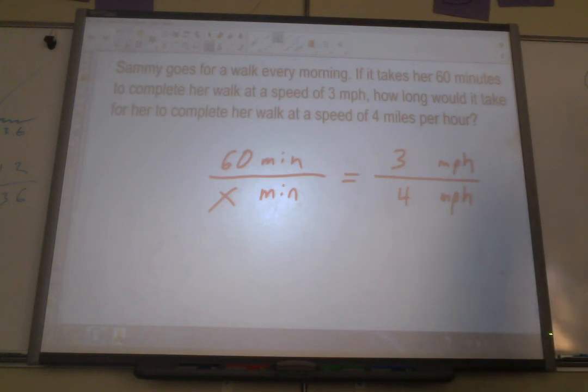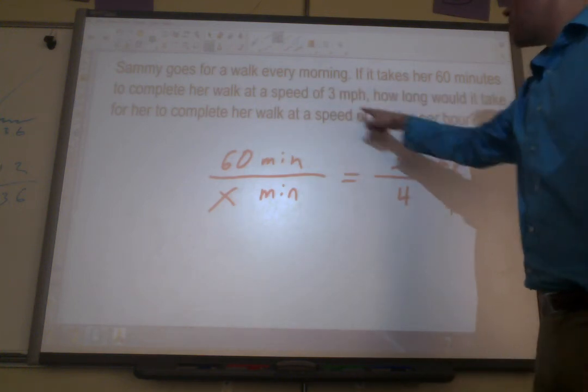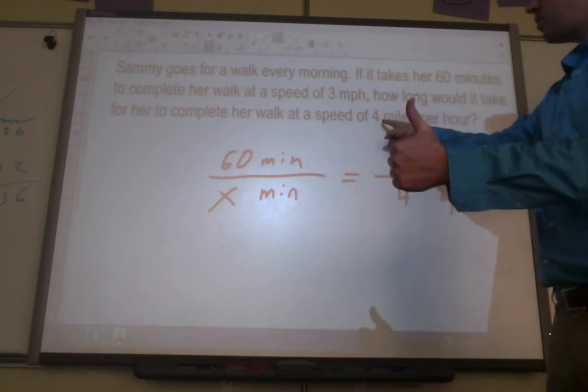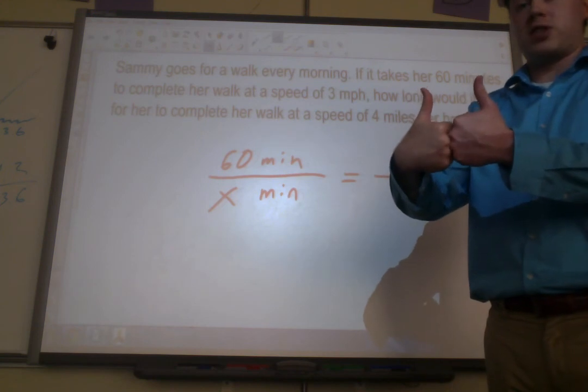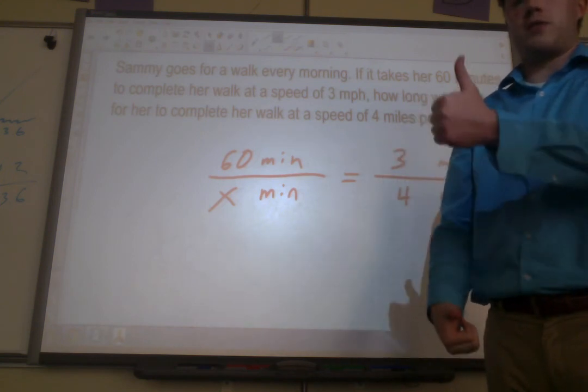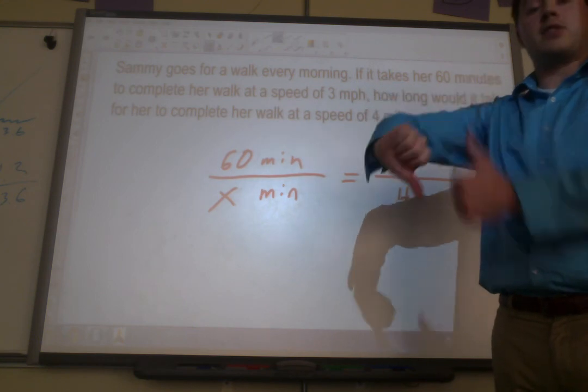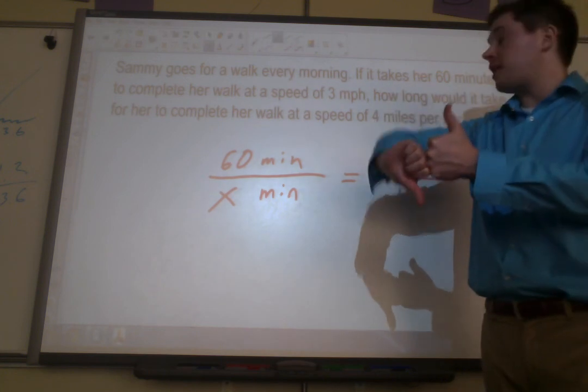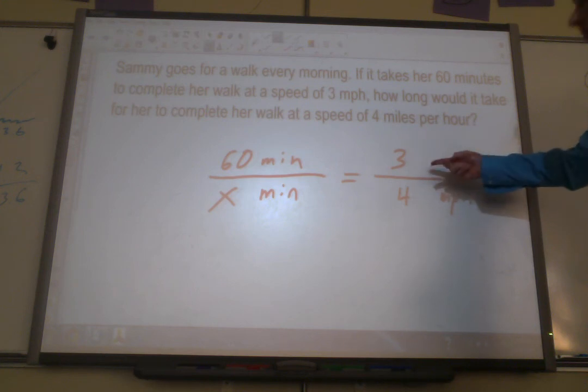Okay, well, think about it. First she's going at this speed and it takes her this long. If she increases her speed to 4 miles per hour, is that going to take more time? So if she walks faster, will it take longer? Or if she walks faster, will it take less time? Well, it makes sense that if she walks faster, it's going to take her less time. Right? So what we have is an inverse or indirect proportion. And that means we've got to take one side and do the reciprocal of it. We've got to flip it.